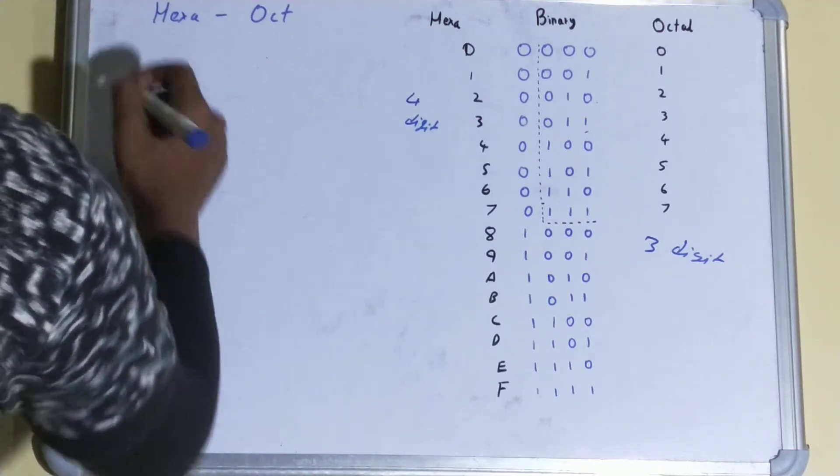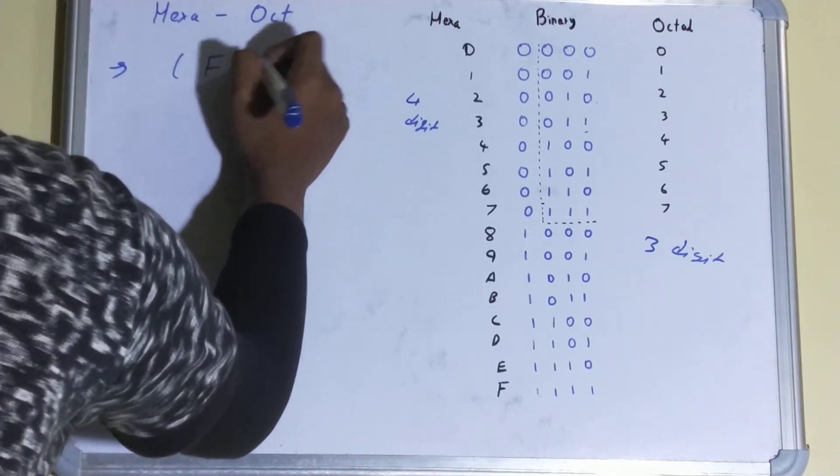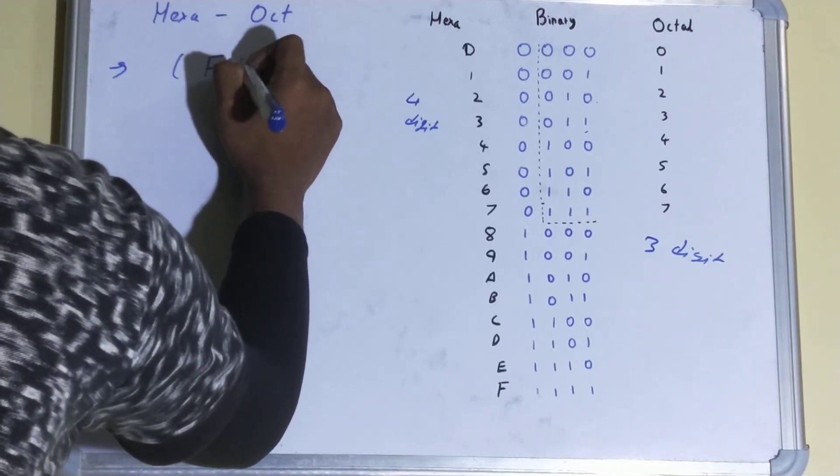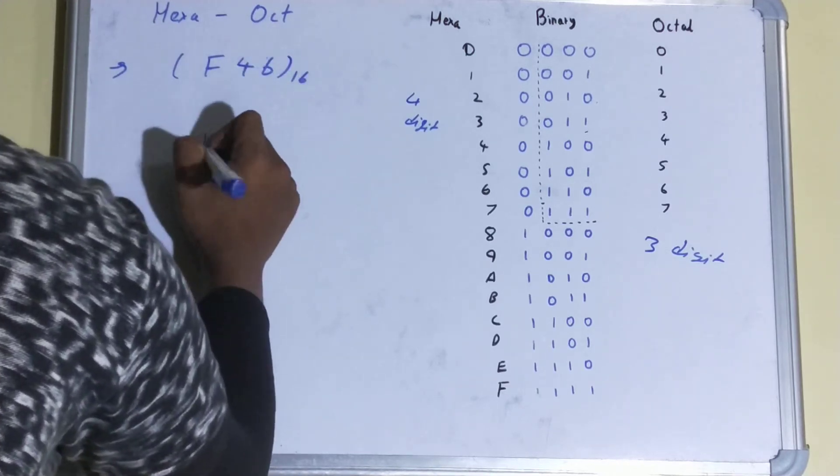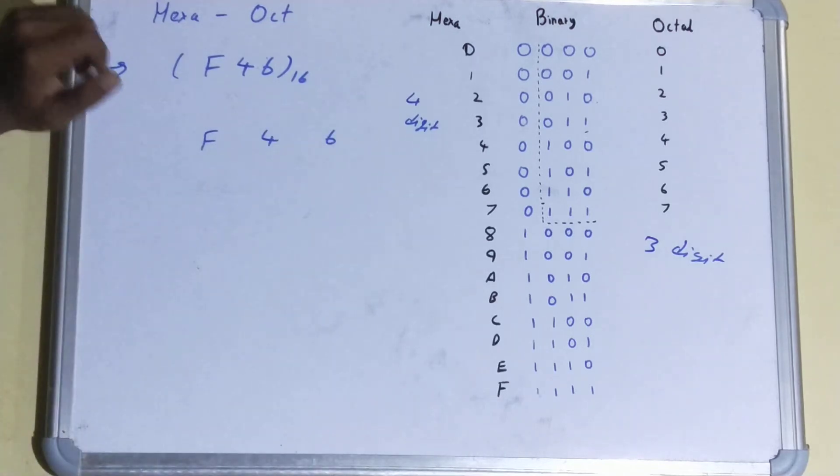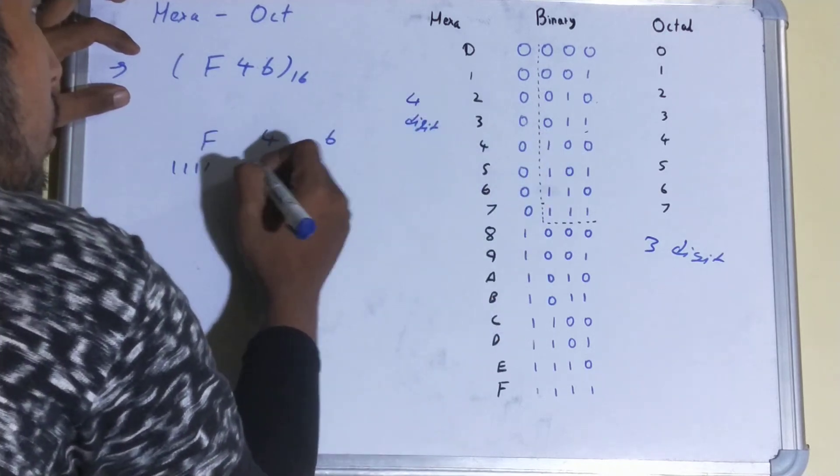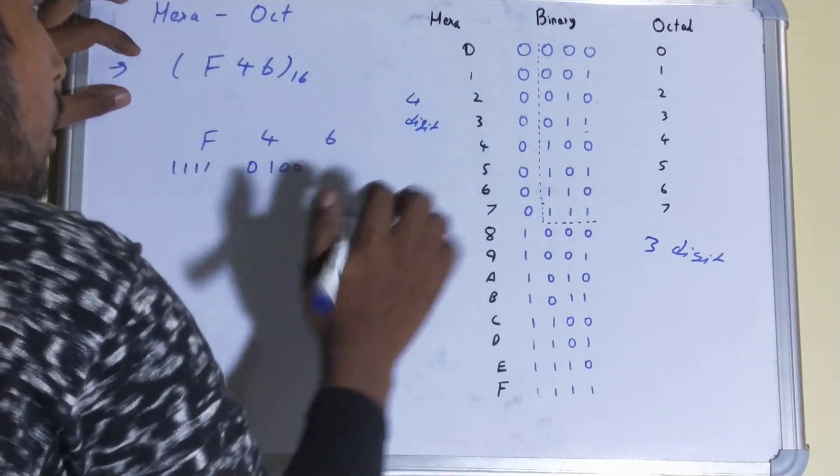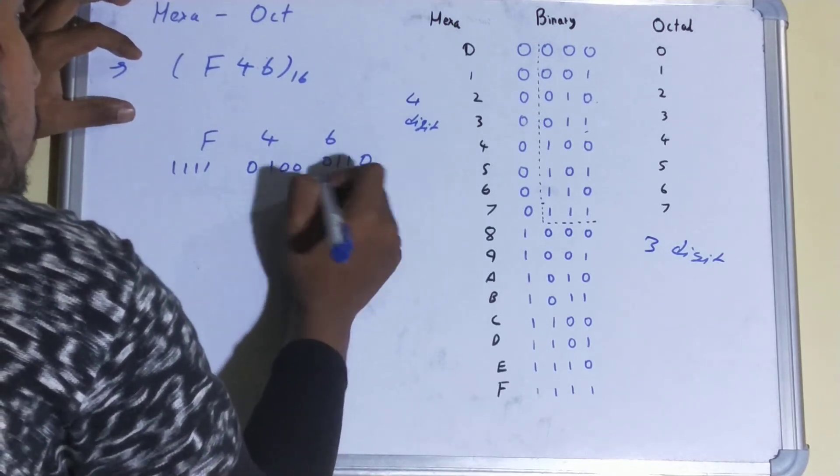Let's see another one quickly. Let's see another one like FF46 base sixteen. We will do the same thing: F, four, six, and we'll write out the binary equivalent. That is four times one for F, then for four it is zero one one zero zero, and for six it is zero one one zero. Then again we make the group of three digits because your octal is a three digit number.